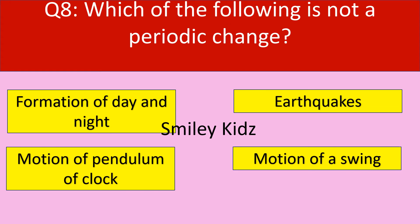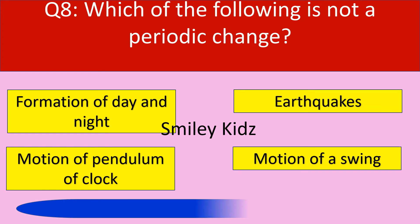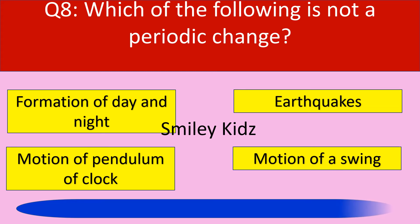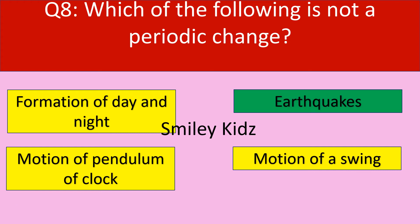Question number 8. Which of the following is not a periodic change? Options are formation of day and night, earthquakes, motion of pendulum of clock, motion of a swing. Your time starts now. Your time is up and the correct answer is earthquakes. Earthquakes occurring is not a periodic change.